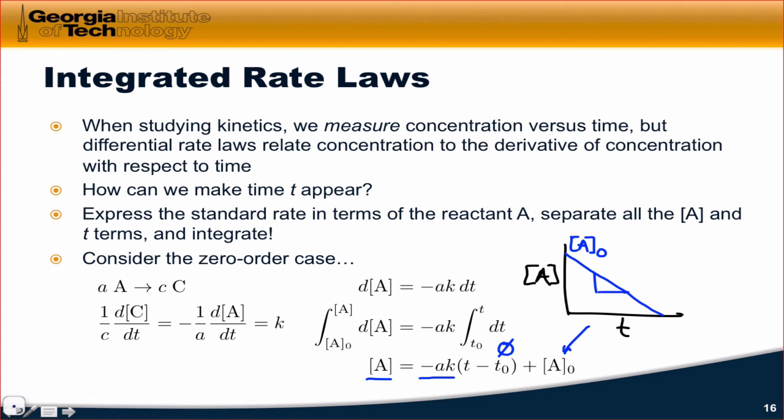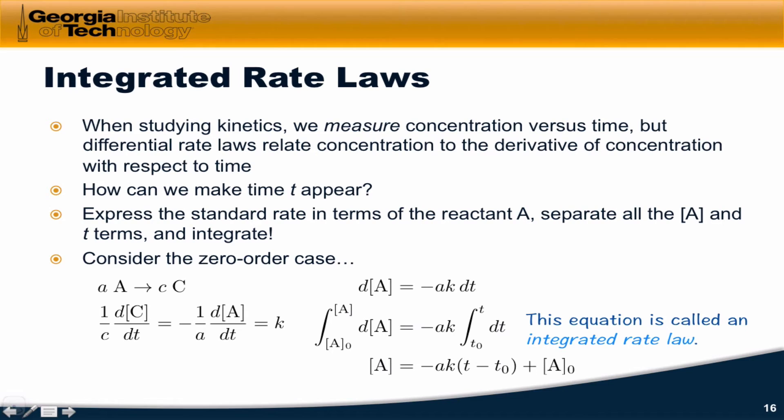such that the slope of this line is equal to negative the stoichiometric coefficient times the rate constant k. This equation at the bottom, which relates the concentration of A at any time point to the time at which we're making the measurement, is called an integrated rate law, and integrated rate laws are critical for experimental determination of reaction orders. You can imagine that this is an equation that suggests a model. It suggests m equals 0, and we can try to fit experimental data to this starred model equation to see if our data suggests m equals 0 in actuality.